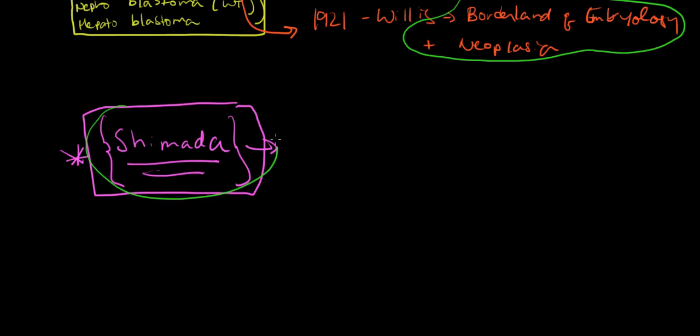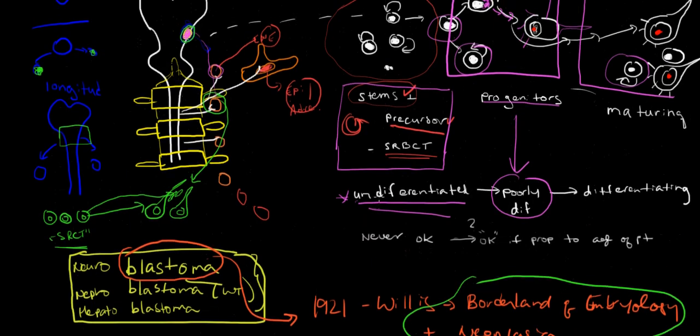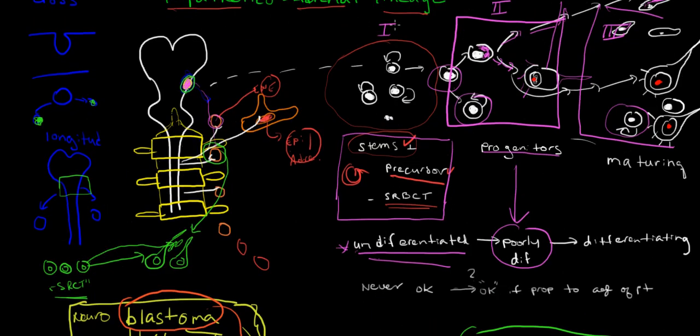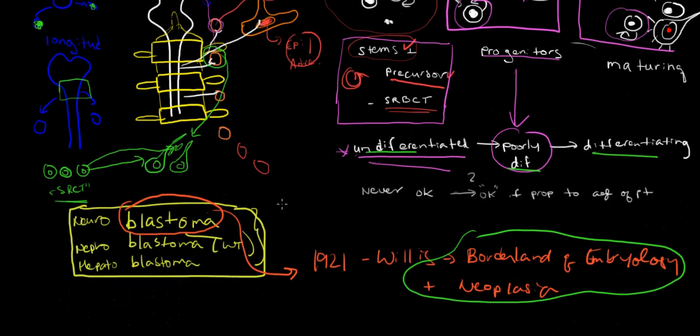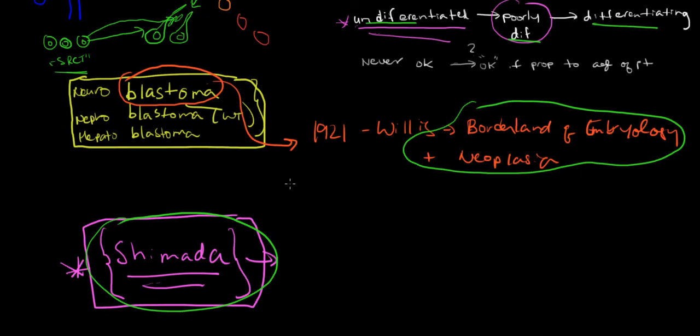What Shimada's observation was - for a long time pathologists would see these various tumors: undifferentiated, poorly differentiated, more differentiating. They would try to say will the patient do well or not do well? The histology was not prognostic. What Dr. Shimada realized is that the histology might be prognostic if we compare it to the age of the patient.